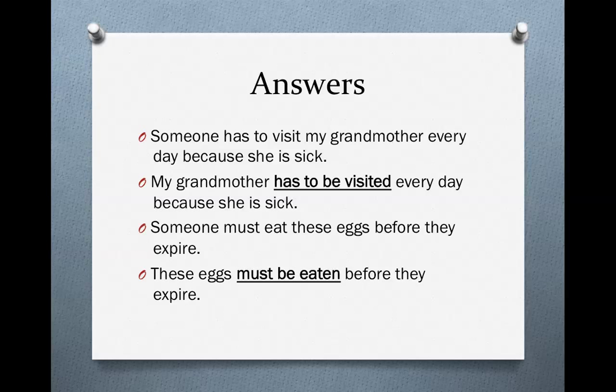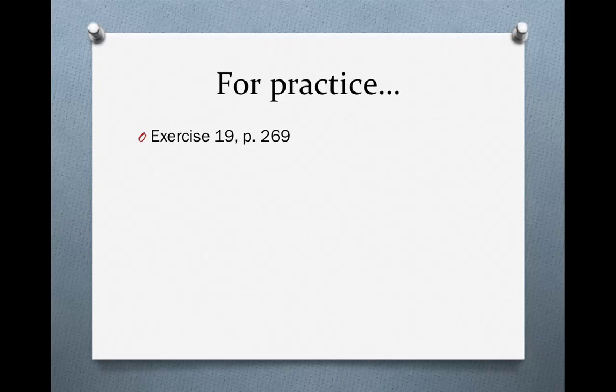Someone must eat these eggs before they expire. We use the modal must, plus the verb be, plus the past participle of the verb eat, which is eaten. So, these eggs must be eaten before they expire. For more practice, do exercise 19 on page 269.